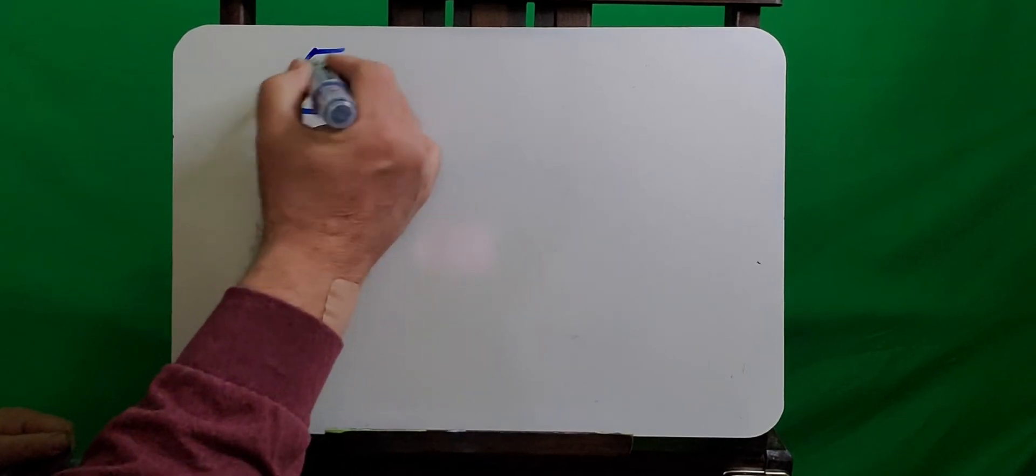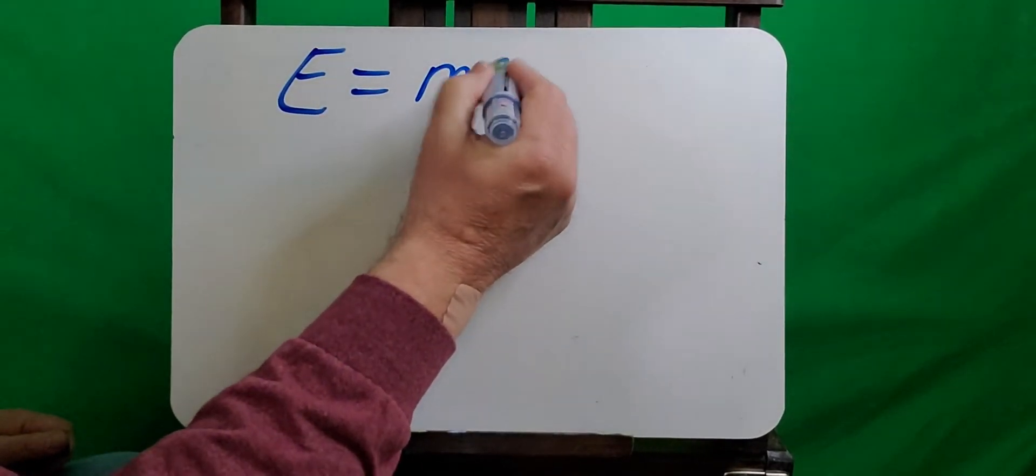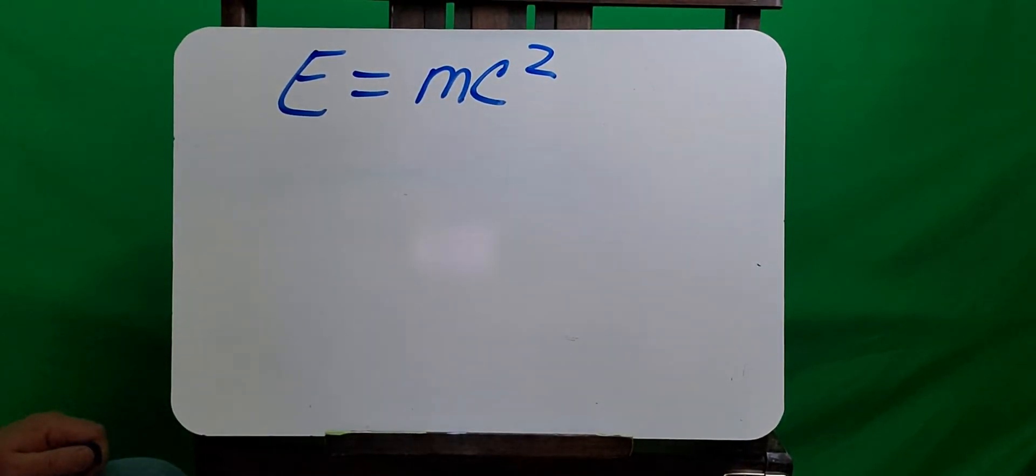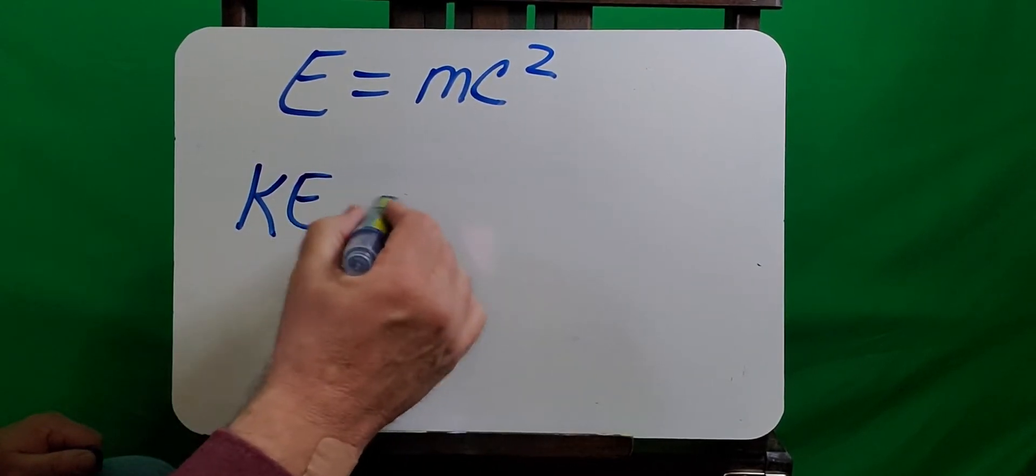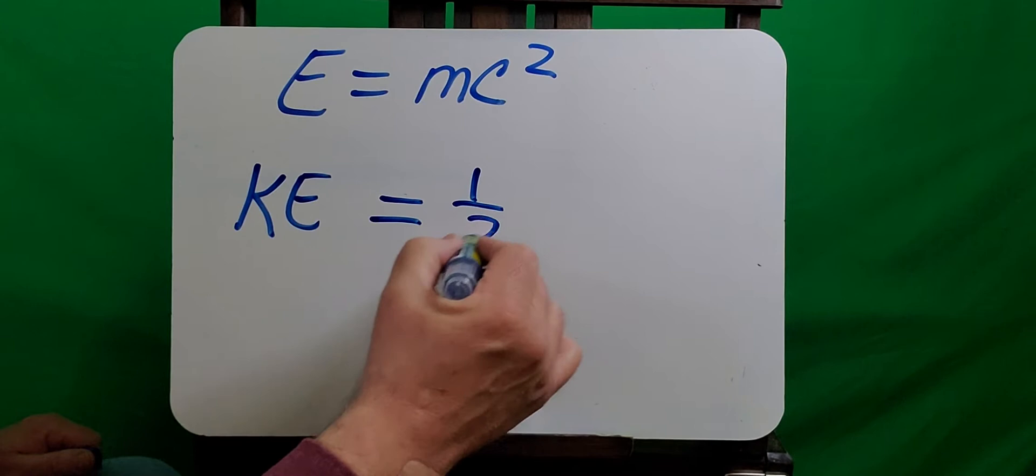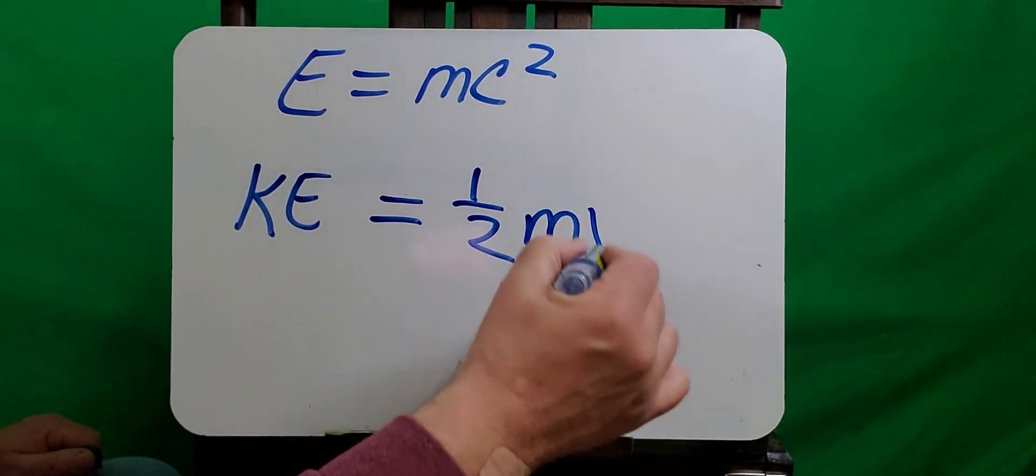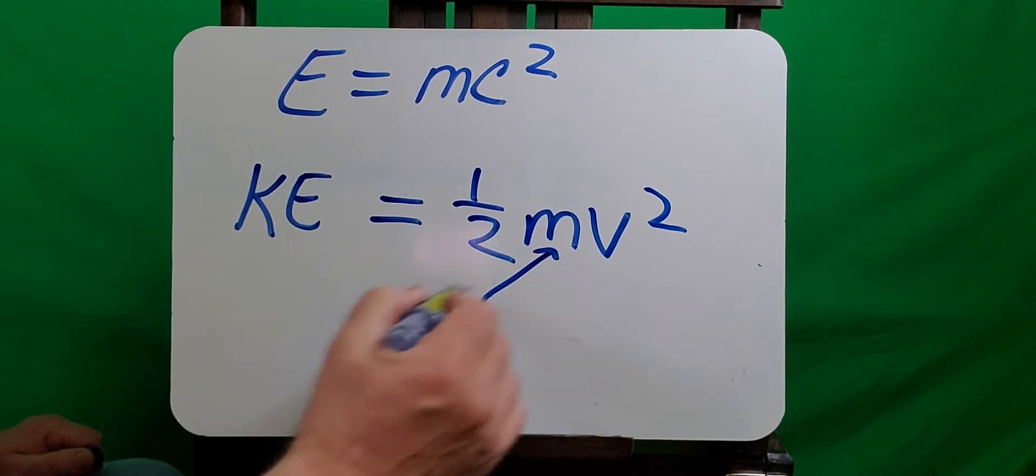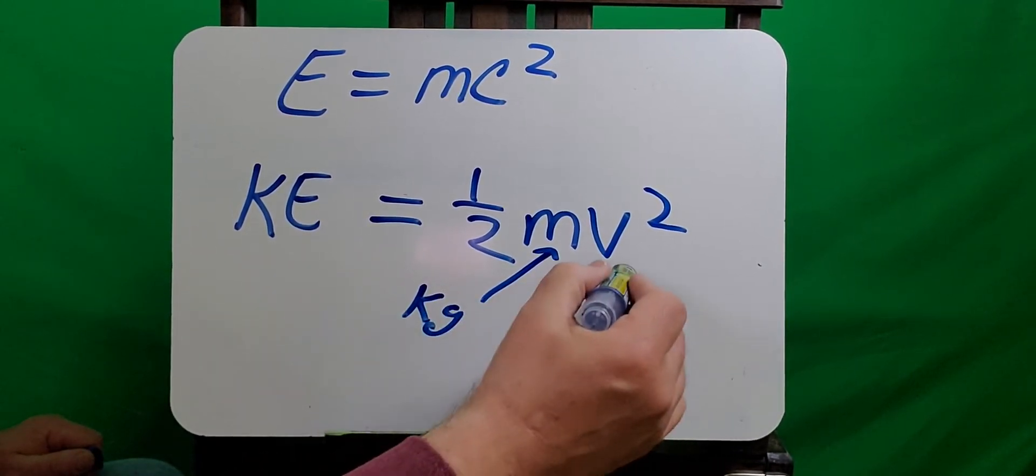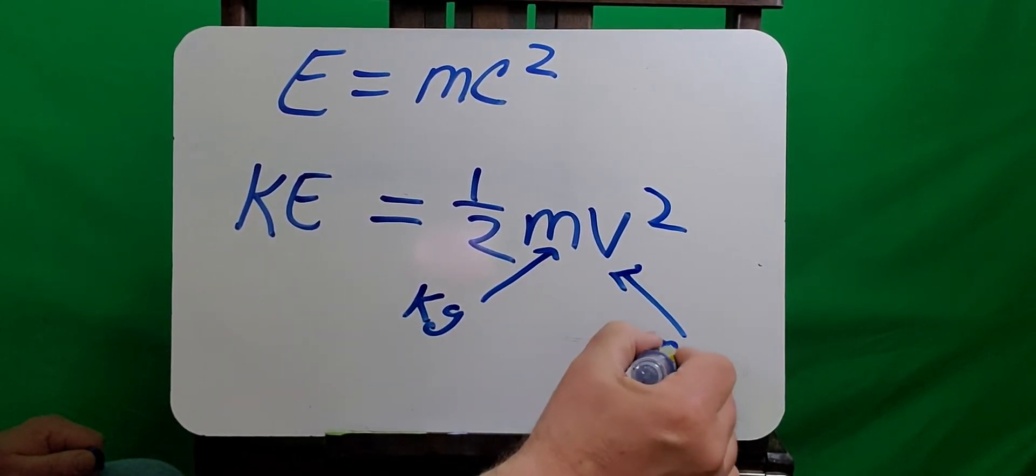So I know you guys have all heard of Einstein's famous equation, E equals mc squared. Well, it turns out that's the energy of an object at rest. We want to measure something that's moving, so we measure its kinetic energy. And the formula is one-half mv squared, where m is the mass of the object in kilograms and v is the velocity in meters per second.